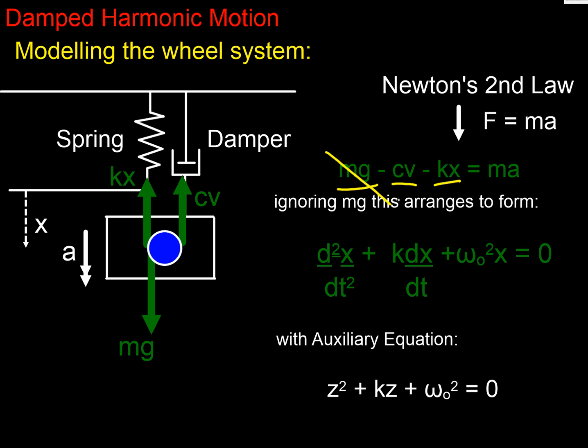Now, I'm going to ignore the mg because that's just a constant. And I get a differential equation that looks like that, having changed the a into d²x by dt². And therefore, I get an auxiliary equation for my complementary function of that form of quadratic in z.